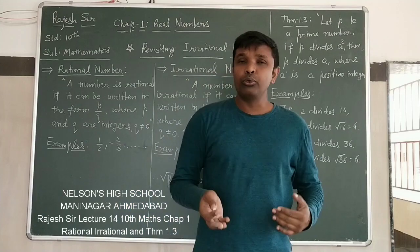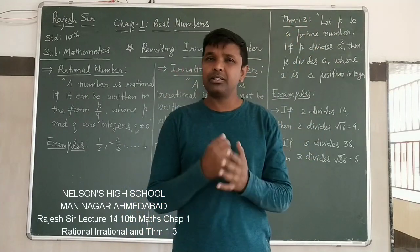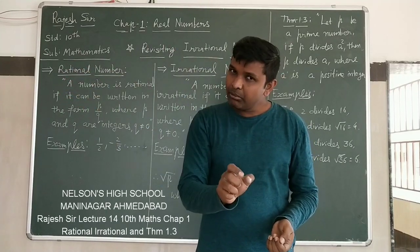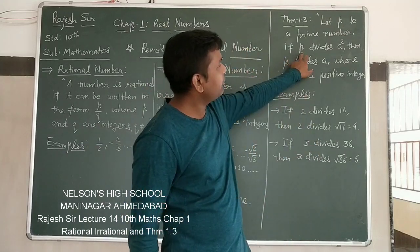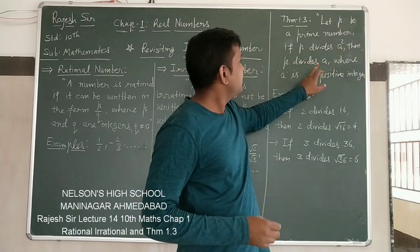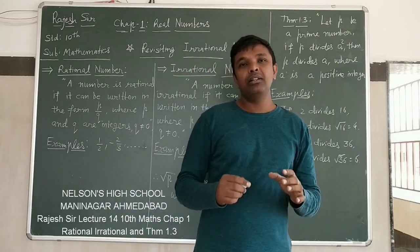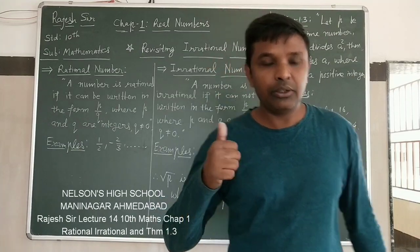And now, we will have method type sums, in which we will use this theorem. What is this theorem? If a number divides some number, then that number will divide its root also. Again, if P divides A square, then P will divide A also. This is what we have to understand. We have to learn for the next coming examples and questions. Thank you.